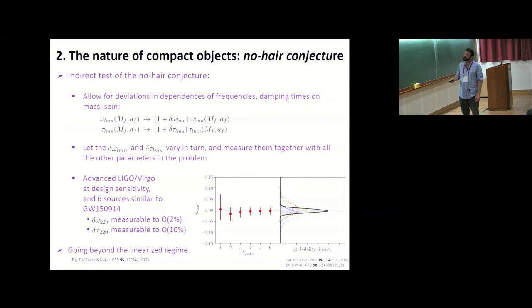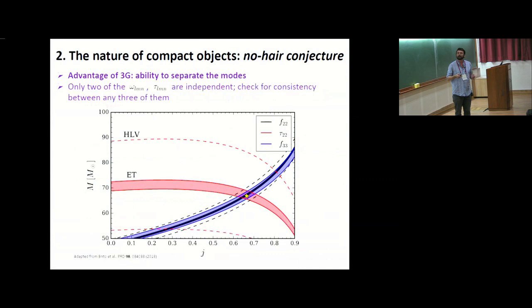There's also thoughts of going beyond the linearized regime. However, the advantage of 3G detectors will be that you will be able to pick apart all of these modes. All of these characteristic frequencies and damping times are dependent upon only the mass and the spin of the final black hole. Only two of these many omega-LMN and tau-LMN are independent, and by comparing any three of them, you can check for consistency. These bands here give you measurements of the 2-2 frequency, 2-2 damping time, 3-3 frequency.